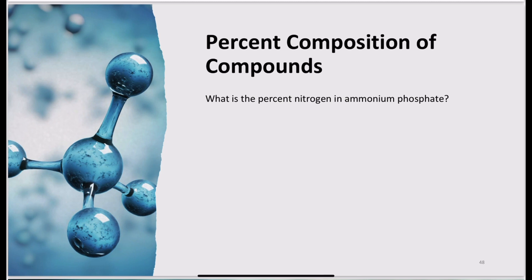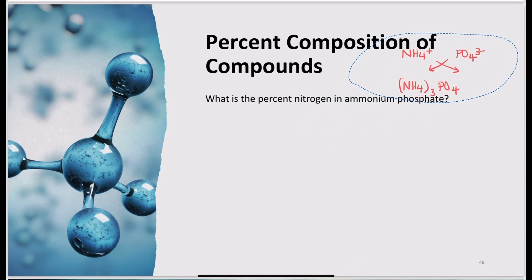Let's look at another example: what is the percent nitrogen in ammonium phosphate? Note that the formula was not given. Ammonium is one of our polyatomics, and phosphate is also a polyatomic: NH4+ and PO4 3−. Crossing the charges shows that I need three ammoniums and one phosphate, giving the formula (NH4)3PO4.